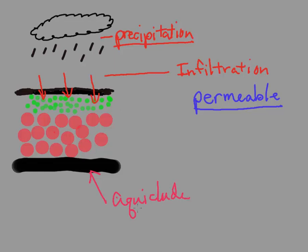And the aquaclude is impermeable, meaning that the water cannot pass through. It stops right there, that's the stop sign.